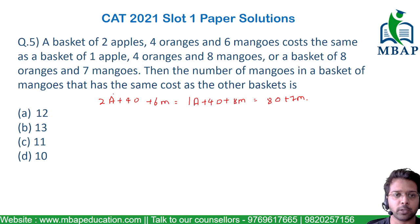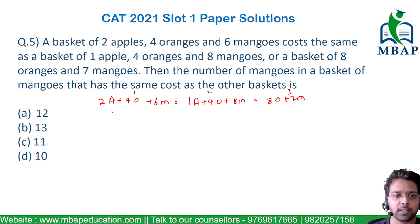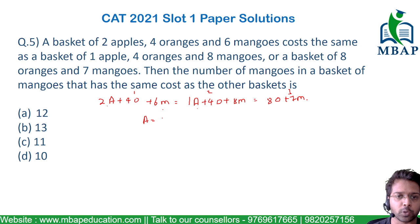Now let's find a relation between apples and mangoes. Looking at equation 1 and equation 2, the 4 oranges cancel. So 2A plus 6M equals 1A plus 8M, giving us A — apple — equal to 2 mangoes.